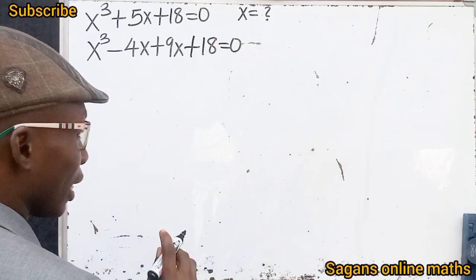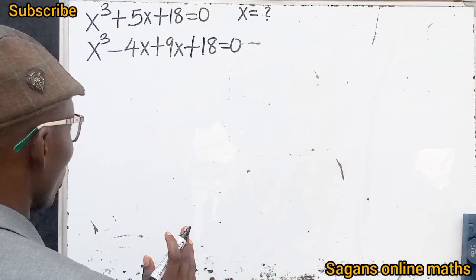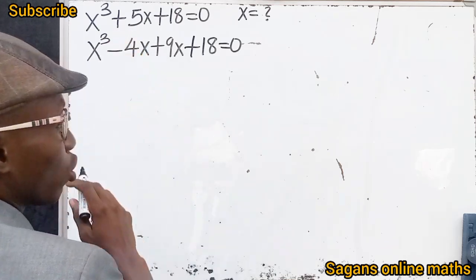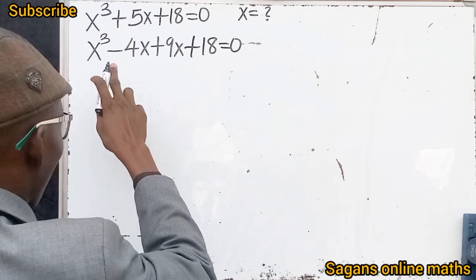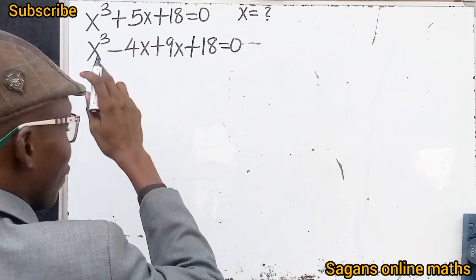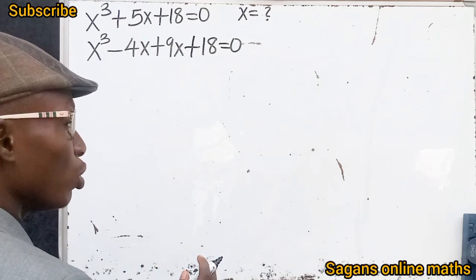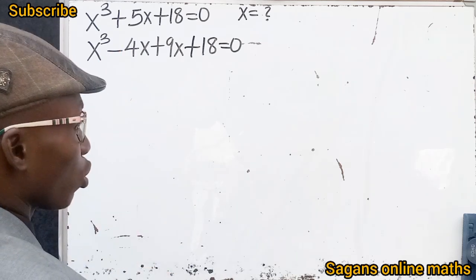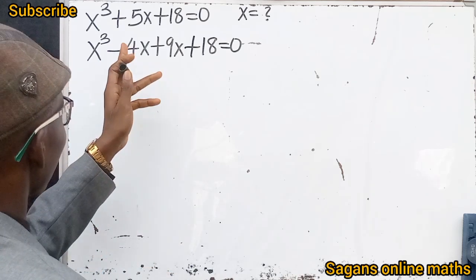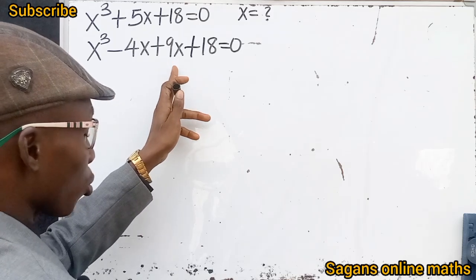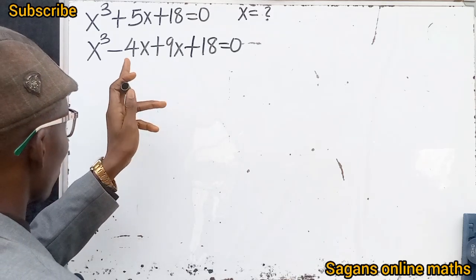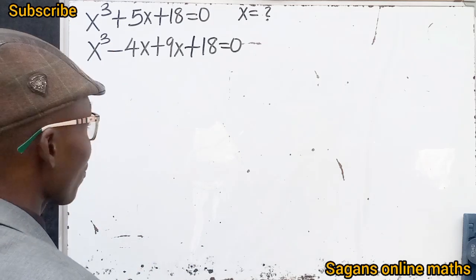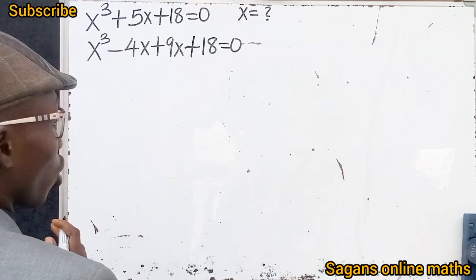You can see how simple and interesting this is — nothing has changed. We are just looking for a way to attend to this problem. Minus 4x plus 9x is still 5x; nothing changed. But we are doing this to help us solve this problem. That is the reason why we are writing 5x as minus 4x plus 9x.